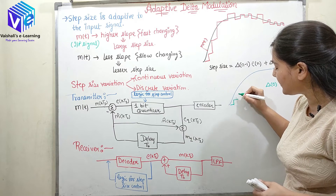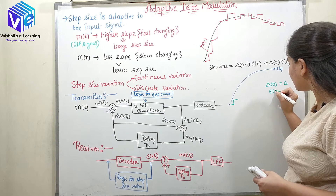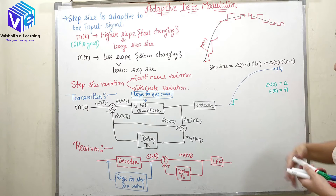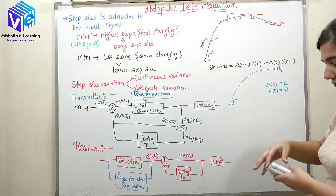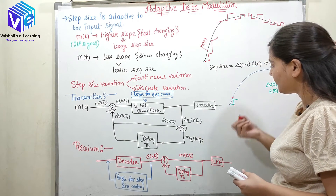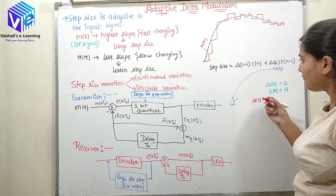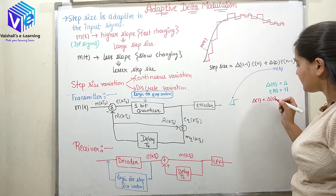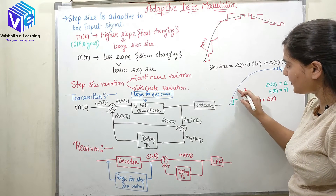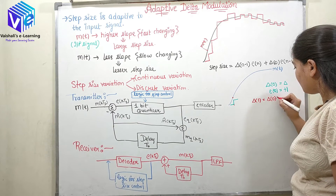I will be seeing the message signal. If the message signal is above, I will be taking the error function to be positive. Here I will be having error function to be positive 1, because the message signal was above the sampled signal. Now if I talk about δ(1): δ(1) would be δ(n−1) which is δ(0), multiplied by E(n). The message signal is positive, so it is multiplied by 1.